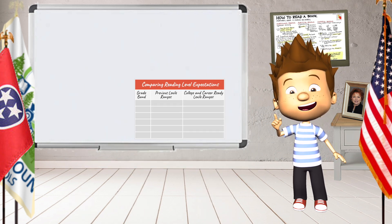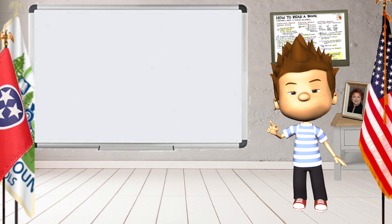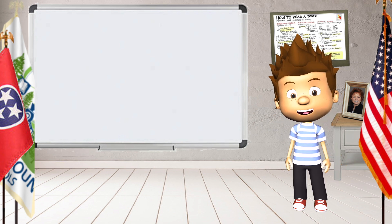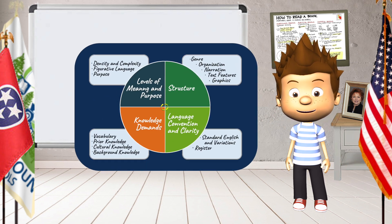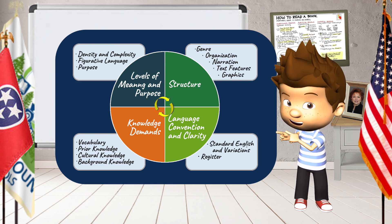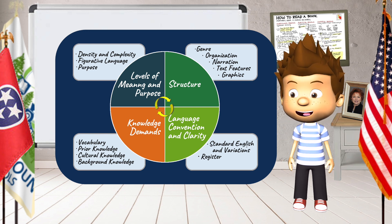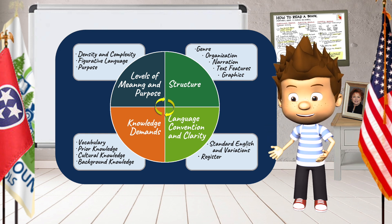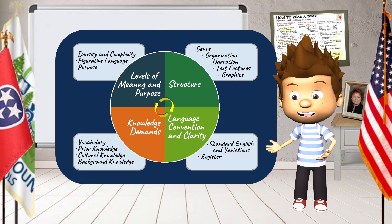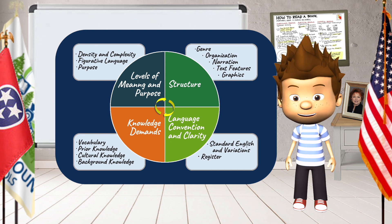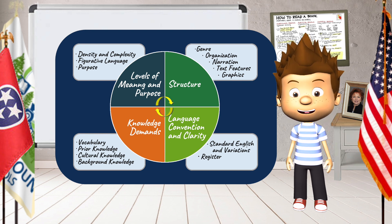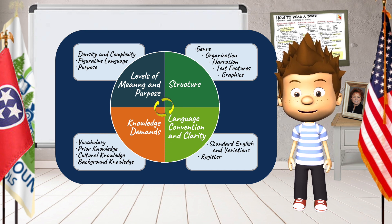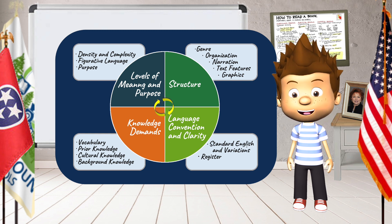The second factor looks beyond just the words and sentences and takes into account other factors. These include the levels of meaning and purpose, the structure, the knowledge demands, and the language used. For example, a text that has a lower Lexile can still be complex if the content is something difficult for a particular student because it requires more background knowledge on the topic.